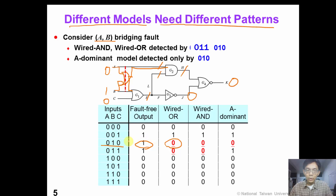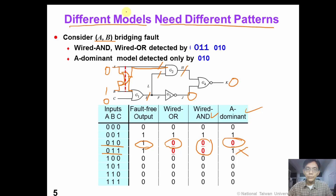In this way, we can detect the fault using pattern 0, 1, 0. Similarly, we can also detect the fault using pattern 0, 1, 1. From this example, we know that different bridging fault models require different test patterns.